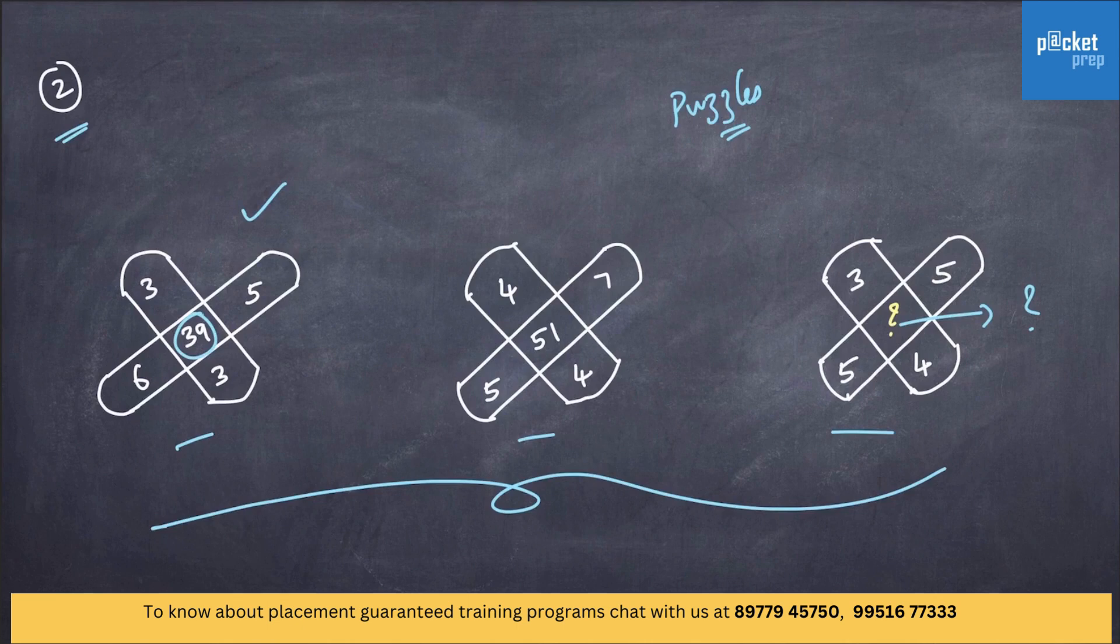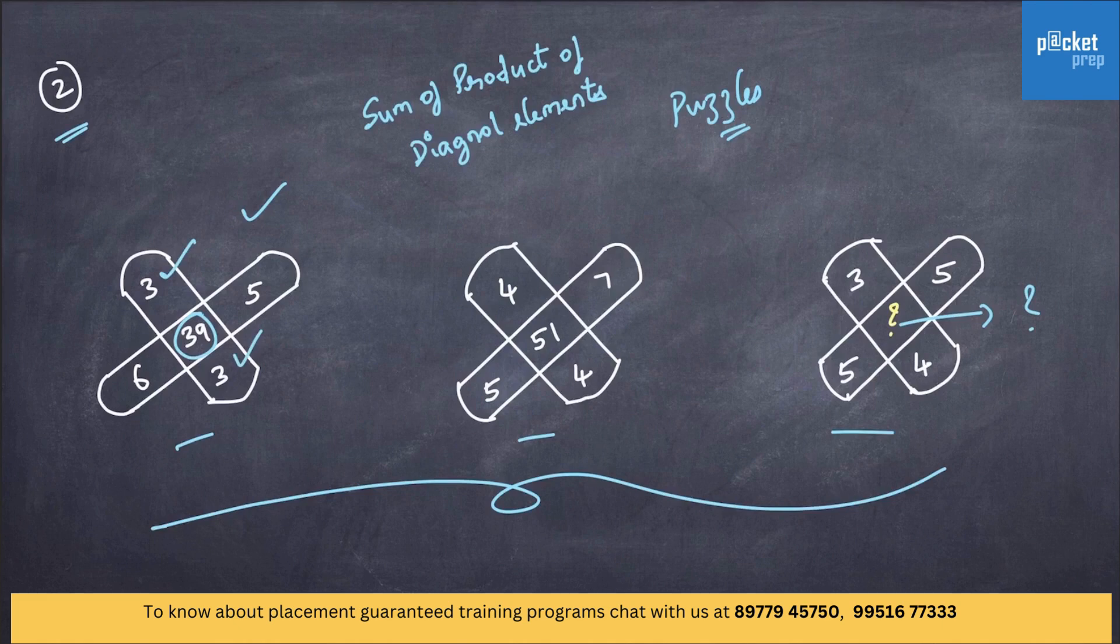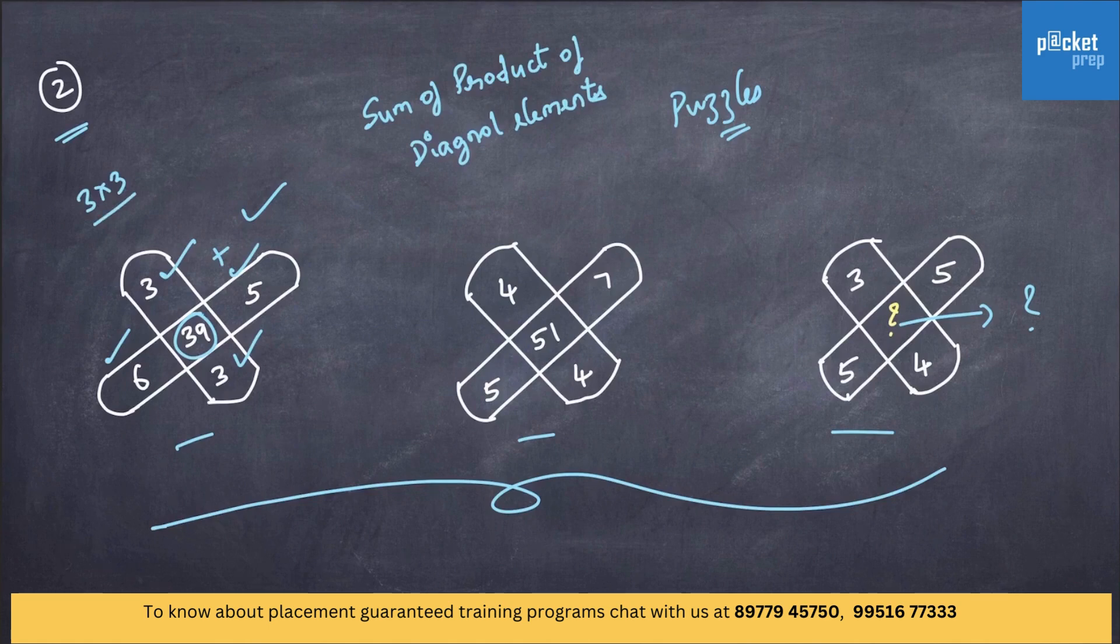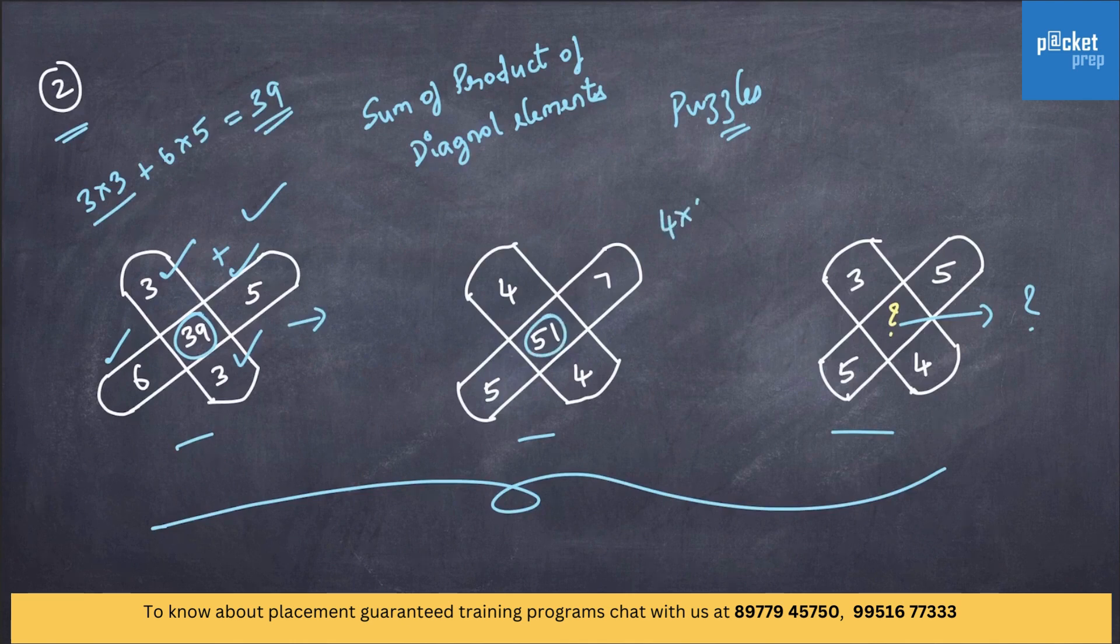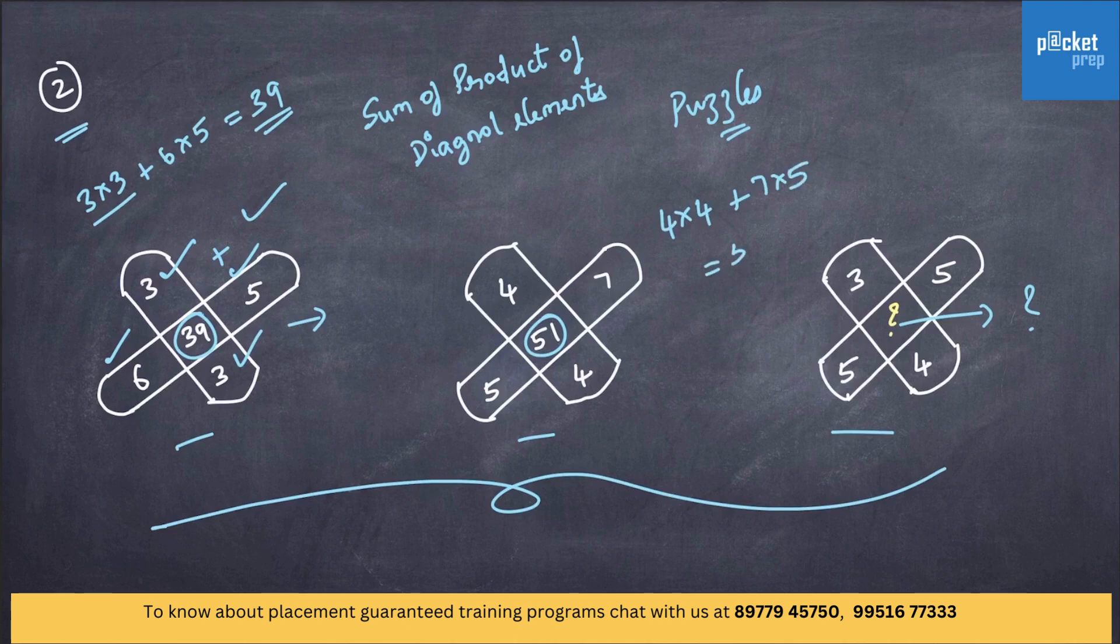Sum of product of diagonal elements, that is 3 into 3 plus 6 into 5. 3 into 3, which are diagonal elements, plus 6 into 5 is equal to 39. This one is done.